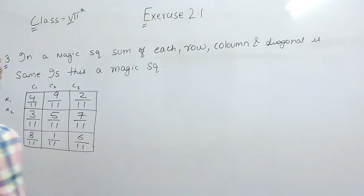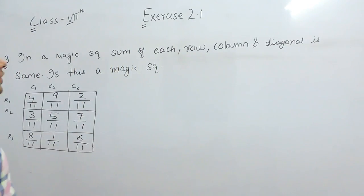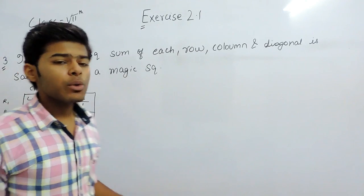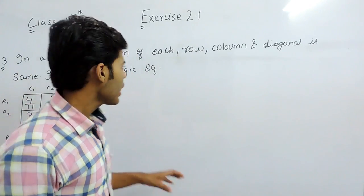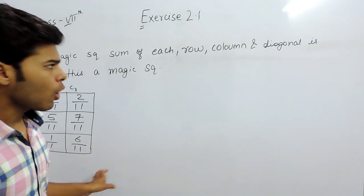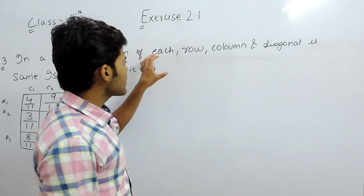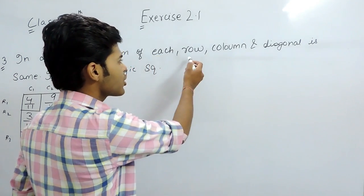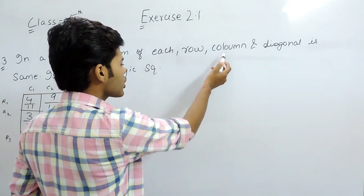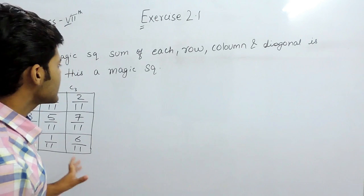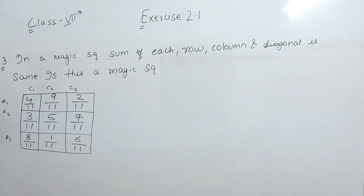Hello students. Now we will solve the third question of exercise 2.1. In this question we have to check whether this given figure is a magic square or not. A magic square is a square in which the sum of each row, each column, and each diagonal is the same.